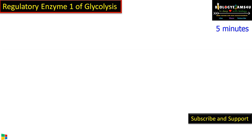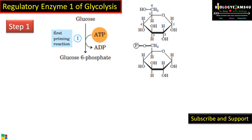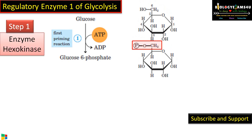Regulatory steps are often the irreversible steps of the pathway. In step 1 of glycolysis, glucose is converted to glucose 6-phosphate. This step is catalyzed by the enzyme hexokinase. Whenever there is addition or removal of phosphate, the enzyme is a kinase. Here glucose is a 6-carbon compound, therefore it is called hexokinase. This is the first regulatory step of glycolysis.